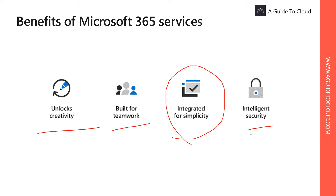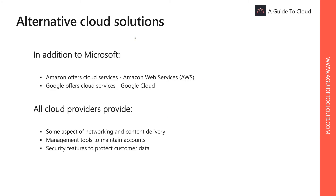Finally, intelligent security is where Microsoft 365 delivers holistic security across users, devices, apps, and data. In addition to Microsoft, Amazon and Google also offer cloud services — known respectively as Amazon Web Services and Google Cloud. Similar to Azure, AWS and Google Cloud offer scalable, on-demand cloud-based compute power. The differences lie in pricing models and exactly what services are supported. Every business is different, and there is no single cloud environment that is the best choice for all.